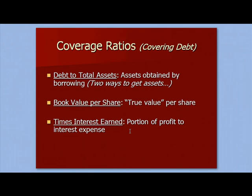I'll wrap up with some definitions. Debt to total assets: assets obtained by borrowing as opposed to assets obtained by issuing stock or equity. Book value: the true value in quotes per share. And times interest earned: the portion of profit that goes to paying your interest expense.